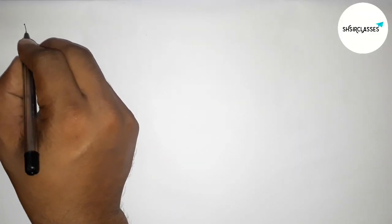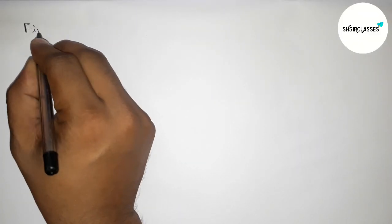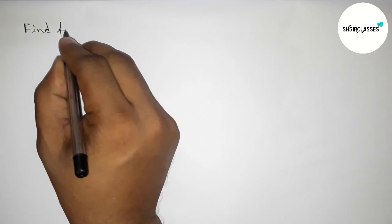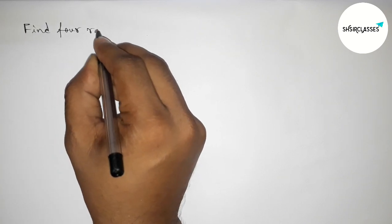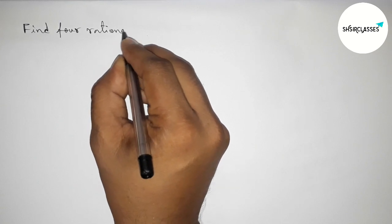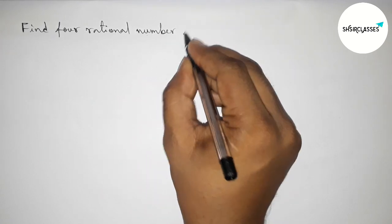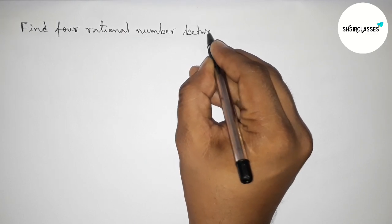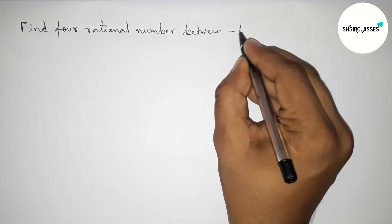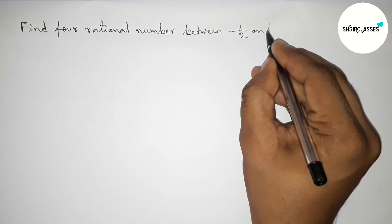Hi everyone, welcome to Sishare Classes. Today in this video, we have to find four rational numbers between minus 1 by 2 and 1 by 2 in an easy way. So please watch the video till the end. Let's start the video.